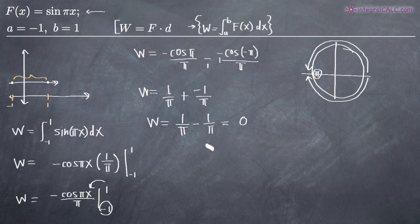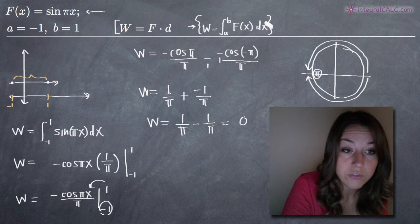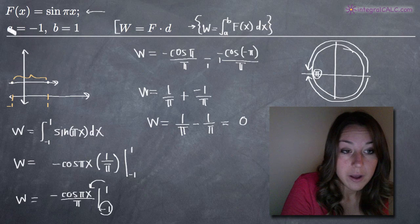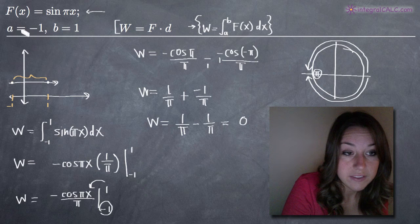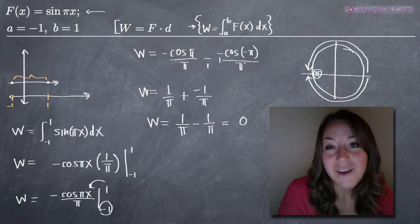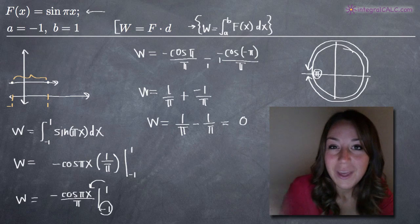So the amount of work it takes to move that particle is actually zero. That's our final answer. That's how we find work when we're given a force function and a range on which we're moving the particle — in this case, negative one to positive one. I hope this video helped you guys, and I will see you in the next one. Bye!